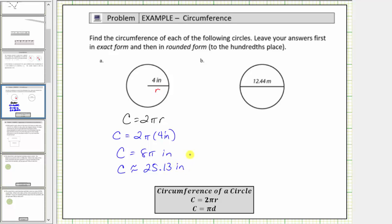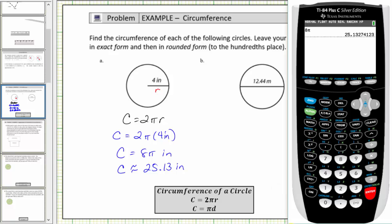Using the π button is more accurate than using 3.14, so let's do a comparison. If we enter 8 times 3.14, notice how we get the approximate value of 25.12, which is slightly different than what we get when we use the π key, because the π key uses a better approximation for π.